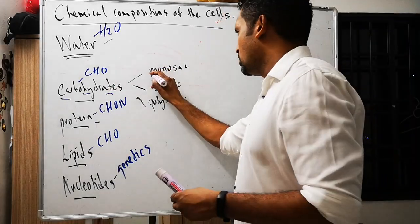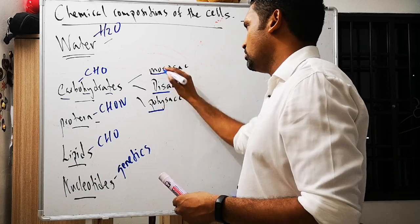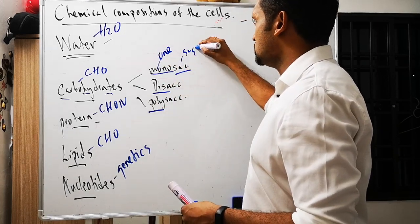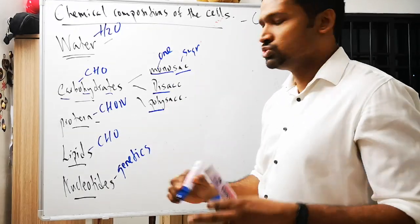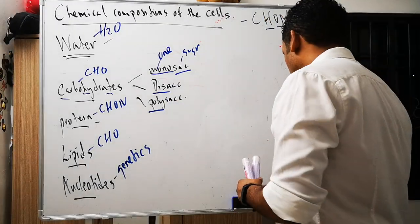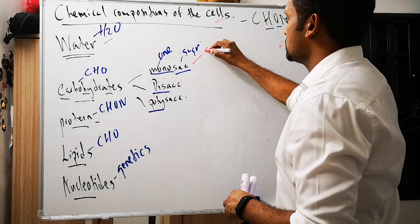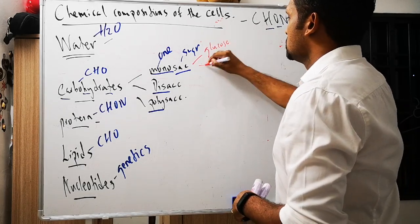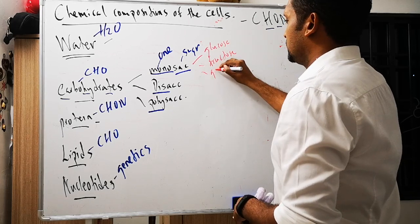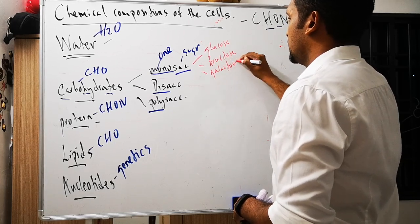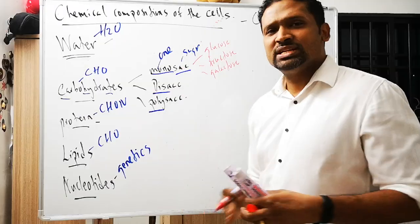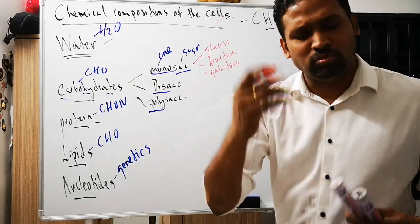Now, carbohydrates. Carbohydrates have monosaccharides, disaccharides, and polysaccharides. Mono means one sugar, di means two sugars, poly means many sugars. The three types of monosaccharide are glucose, fructose, and galactose. A disaccharide is a combination of two monosaccharides.